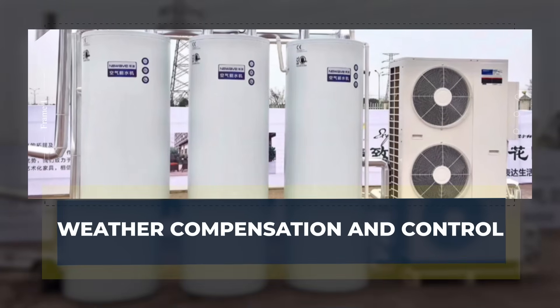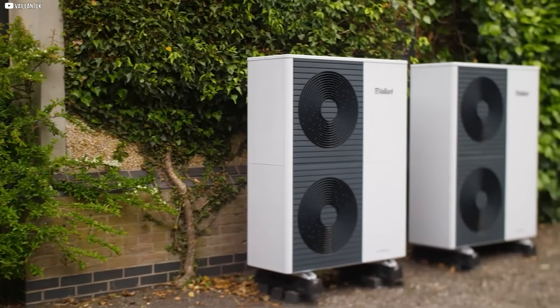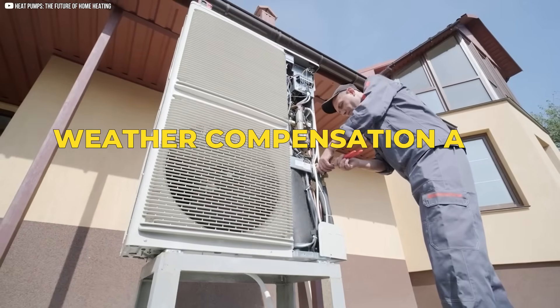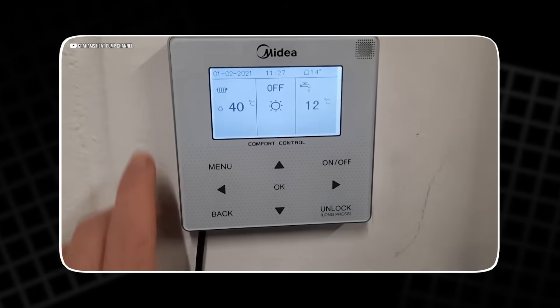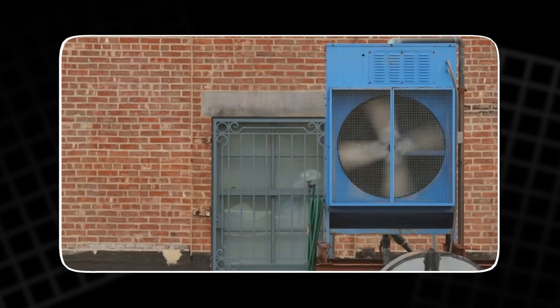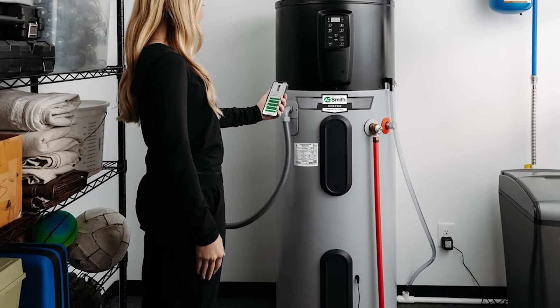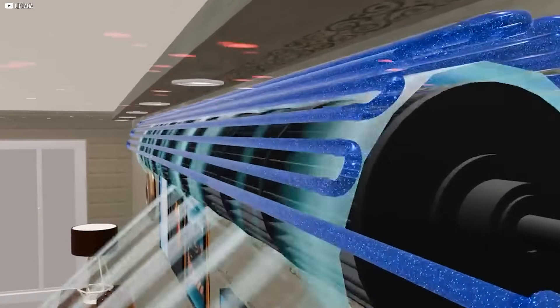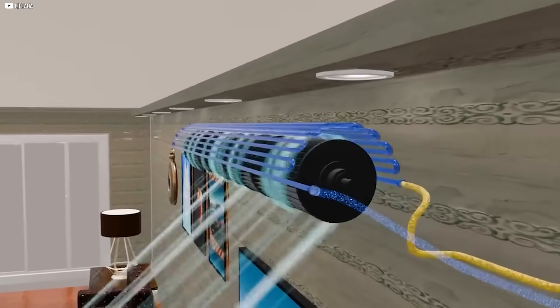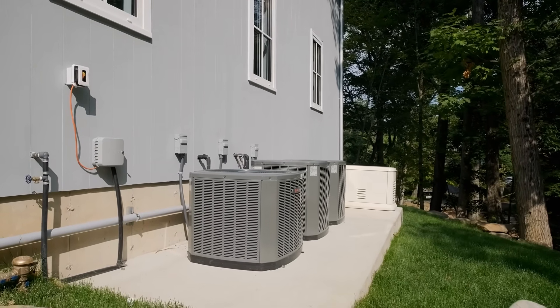Weather compensation and control. One of the most effective ways to optimize a heat pump's performance is through weather compensation and modulating controls. Traditional systems use on-off controls, meaning the system operates at full power until the desired temperature is reached, then shuts off. When the temperature drops slightly, the system turns back on to heat up again. This back-and-forth cycle not only wastes energy, but also causes the system to work harder than necessary.